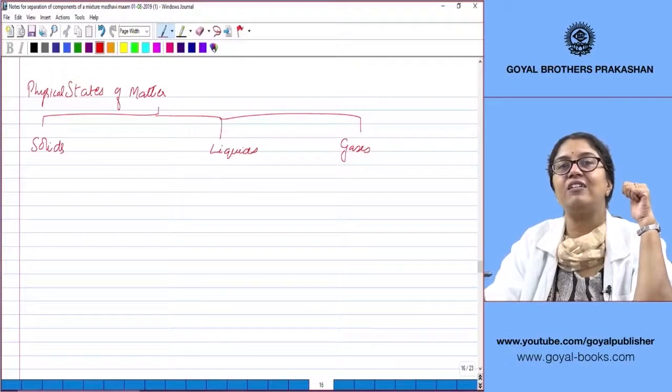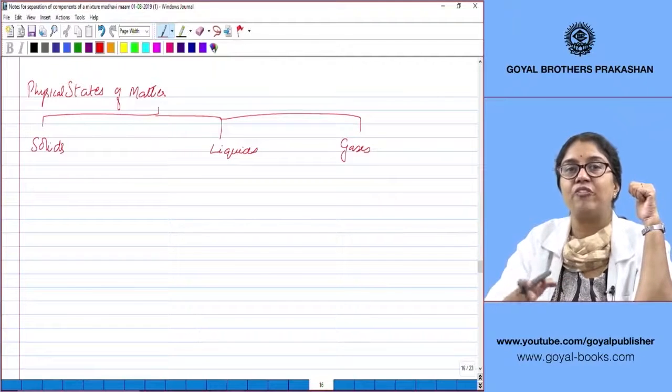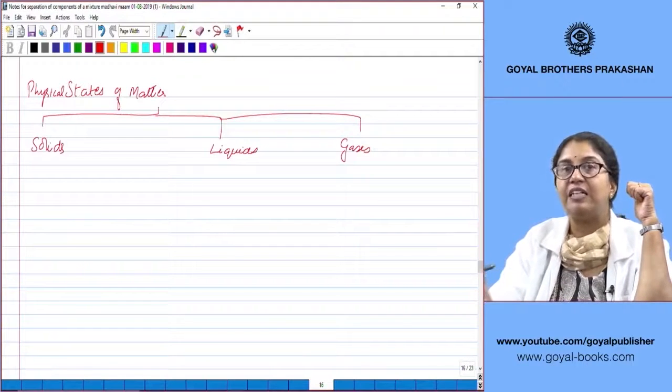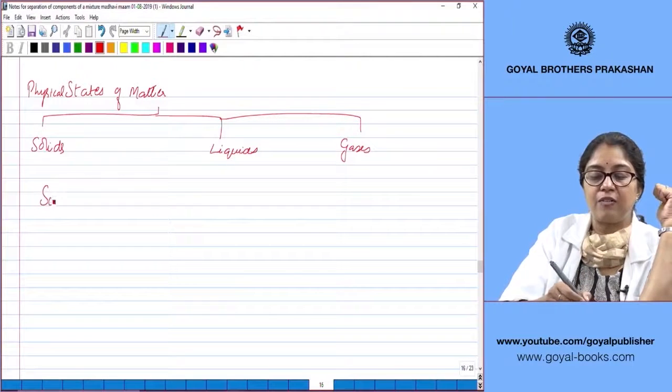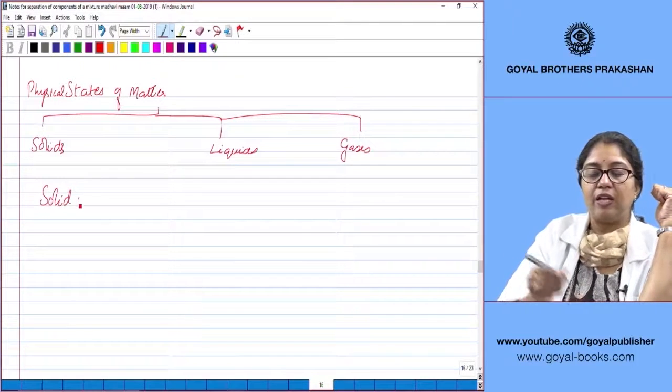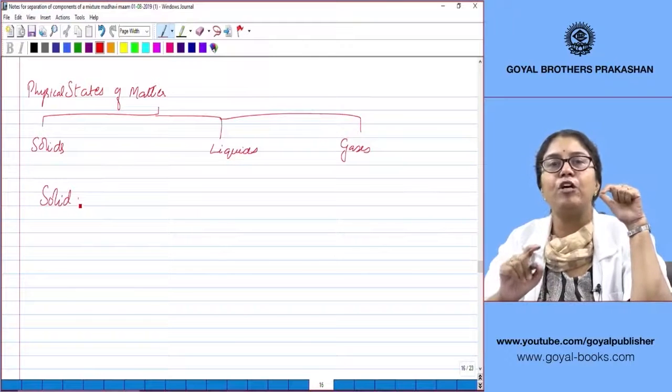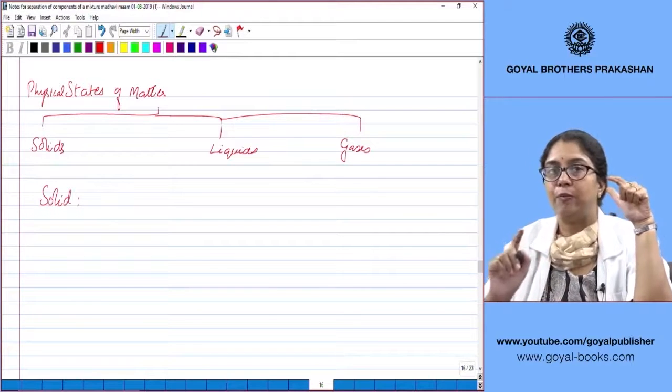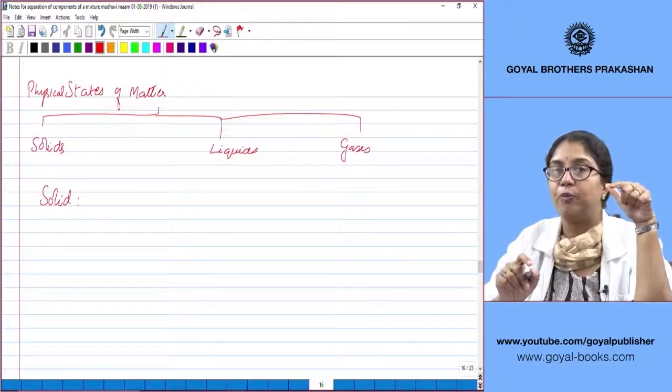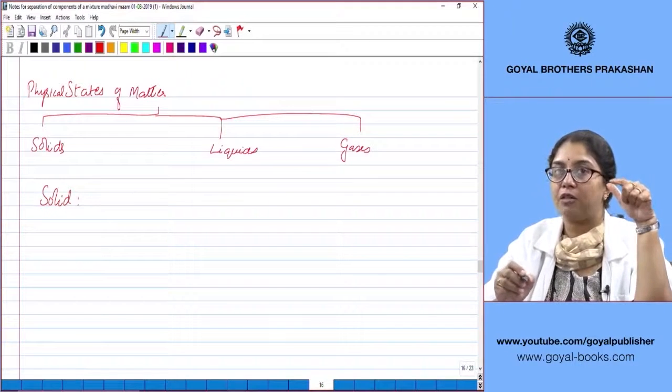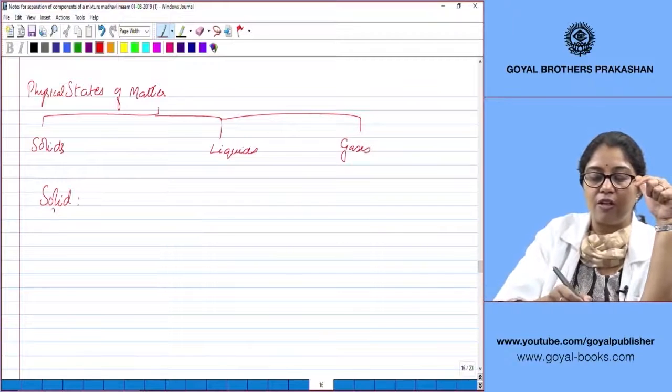What are the characteristics of each state of matter? Let us study them in detail. Let's start with solids. Take the example of a book, children. Does the book have mass? Yes, the book has mass. So all solids have mass.